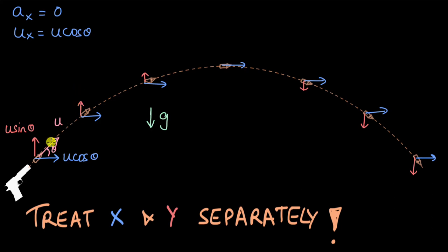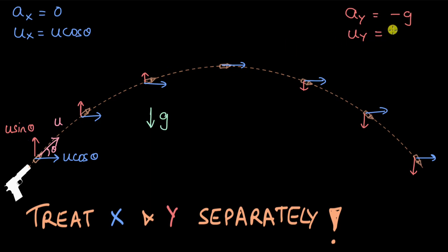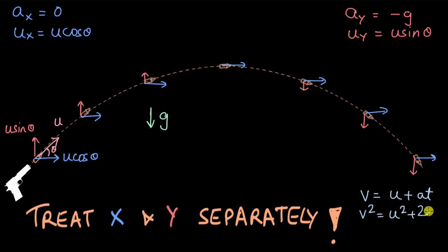For the y-direction, we know the initial vertical component and also the acceleration involved. The acceleration ay is minus g — if we take upward as positive, g acts downwards so it is negative. The initial vertical component of velocity uy is u·sinθ. Now we write the kinematic equations for reference: v = u + at; v² = u² + 2as; and s = ut + ½at².